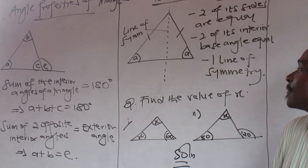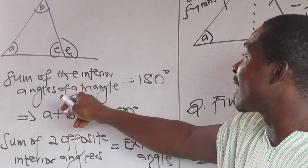Angle properties of triangles. Let's go. That's a triangle. There are properties.